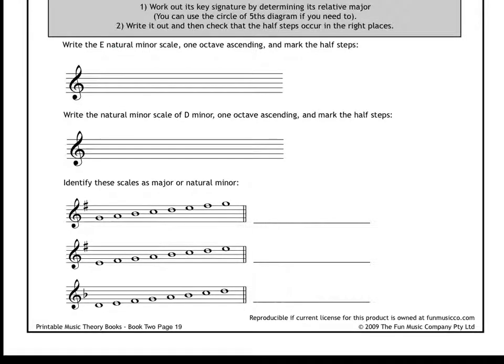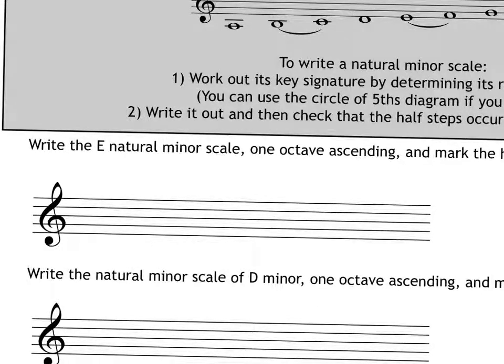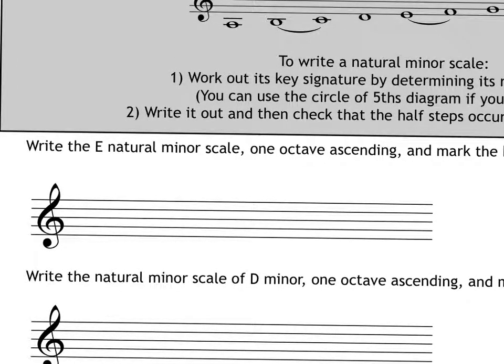So, you'll see, obviously, that the key signature of E minor is just one sharp. Okay, so in this question, we're going to write first the key signature for E minor. One sharp is on the F line, right there.